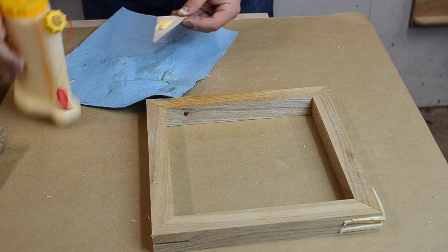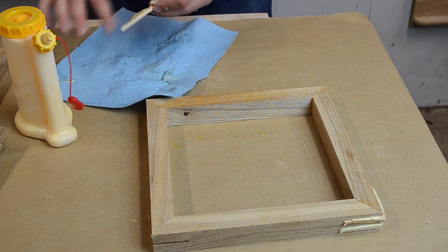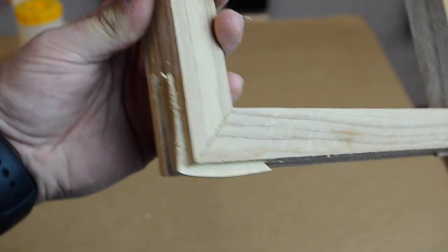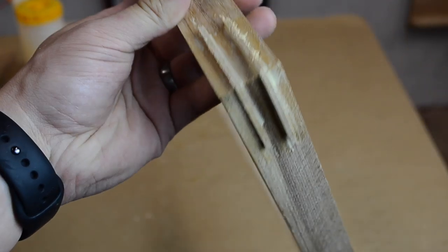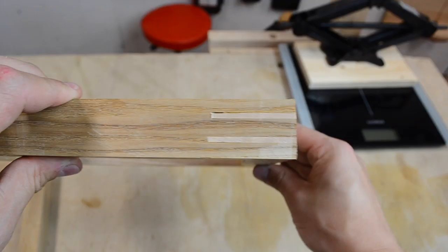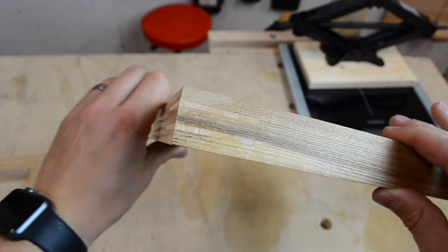I cut the splines out of hard maple and adjusted the thickness to fit snugly in the slot without having to hammer them in. I let the glue dry on these overnight as well, before sanding the excess flush with the outside of the frame.